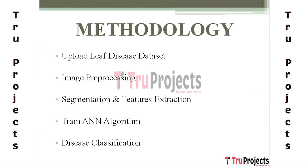The next module is Train ANN Algorithm. Here the extracted features will serve as input to train an artificial neural network model. This powerful machine learning technique learns complex patterns and relationships within the data by iteratively adjusting weights and biases. The ANN will comprehend the subtleties of different leaf diseases, enabling accurate classification.